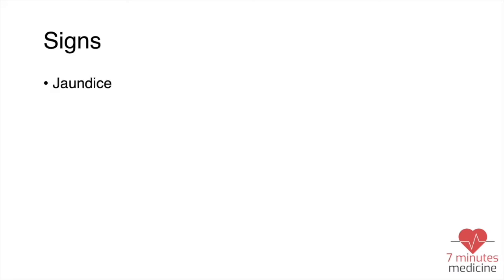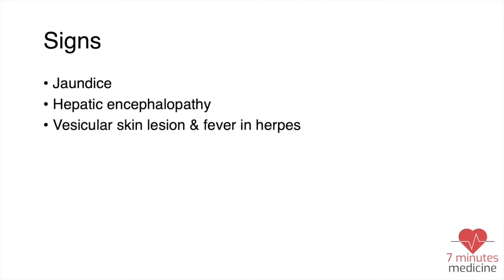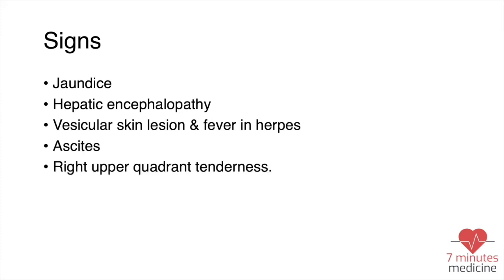For the signs, we can see jaundice and hepatic encephalopathy — please check our lecture about hepatic encephalopathy for more details. You also have to examine the skin to see if there are any signs of viral illness like herpes, as well as ascites and right upper quadrant tenderness.